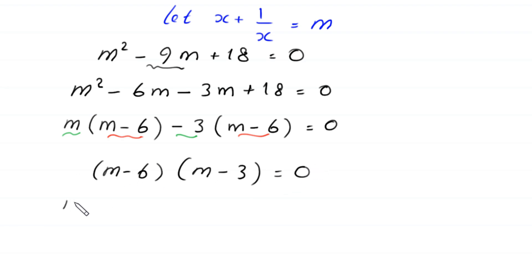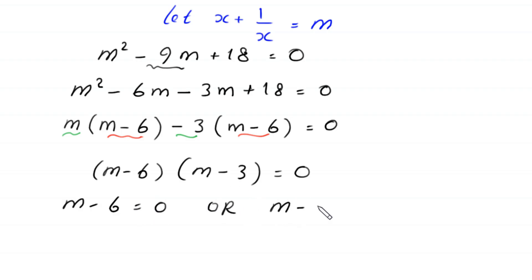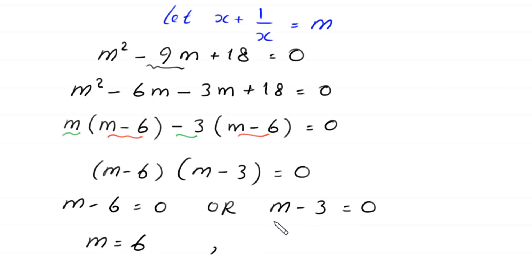Since (m minus 6) is common, we factor it out, giving (m minus 6)(m minus 3) equals 0. From here, either m minus 6 equals 0, giving m equals 6, or m minus 3 equals 0, giving m equals 3.